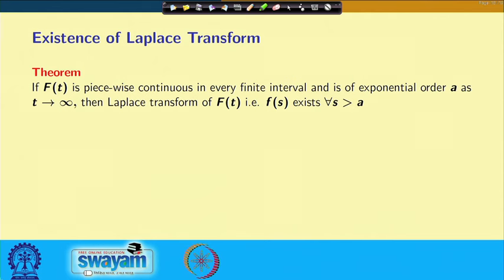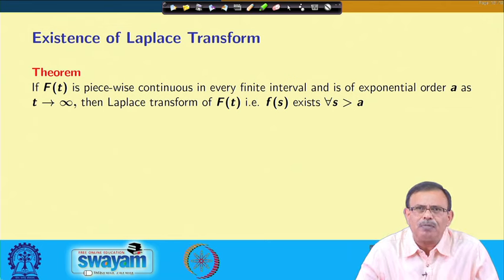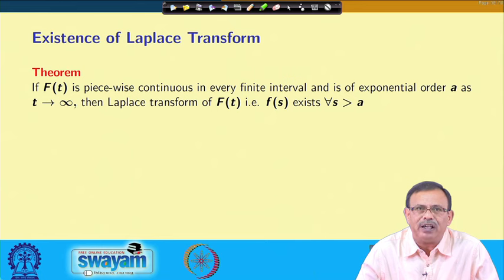In this class we will see how exponential order function affects the Laplace transform. For that, let us see the existence of Laplace transform — that means, whether if I take any function, the Laplace transform of that function will exist or not. We have a theorem which says that if f(t) is piecewise continuous in every finite interval and is of exponential order a as t approaches infinity, then the Laplace transform F(s) exists for all s greater than a.